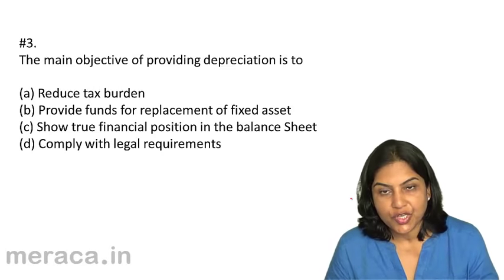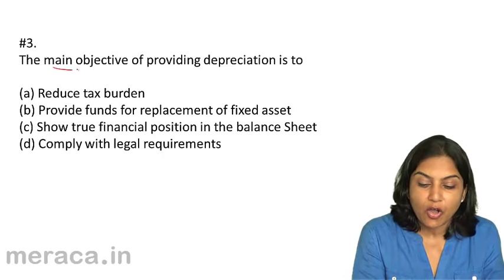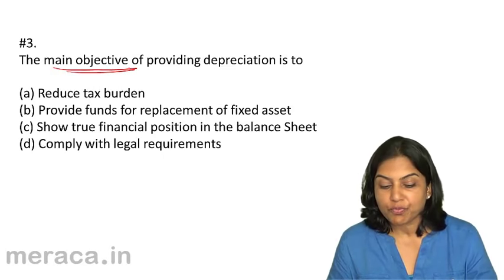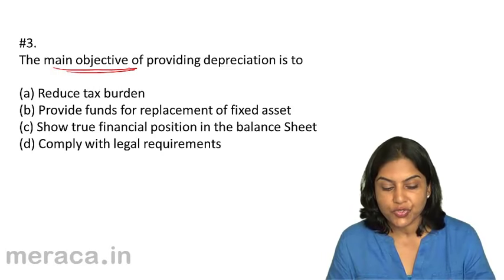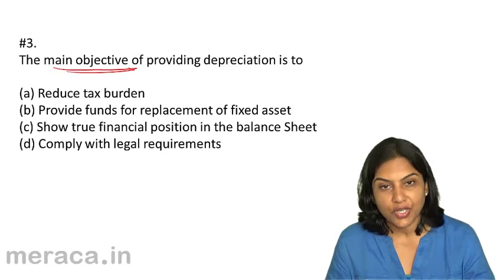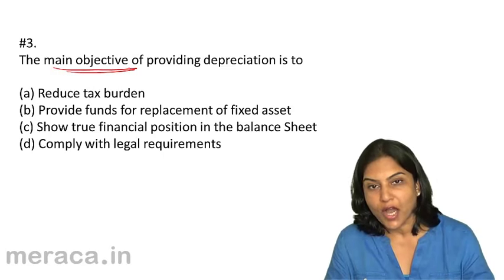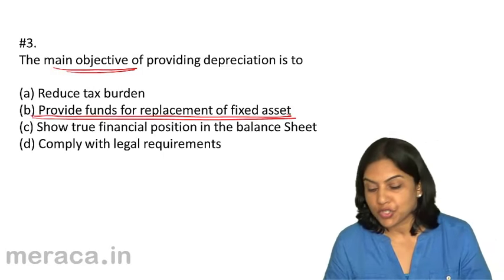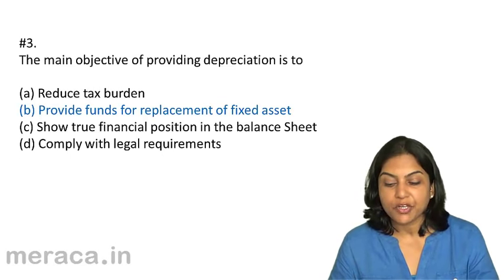When we charge depreciation, it is true that the tax burden does come down, but we are looking at the main objective of providing for depreciation. The main objective would be to provide funds for replacement of the asset. The answer should be 3b. Options c and d — it shows the true financial position in the balance sheet, which is true, and we need to charge depreciation to comply with legal requirements. But if we have to pick one out of these four, it would be b: provide funds for replacement of an asset. Therefore, the correct answer is 3b.